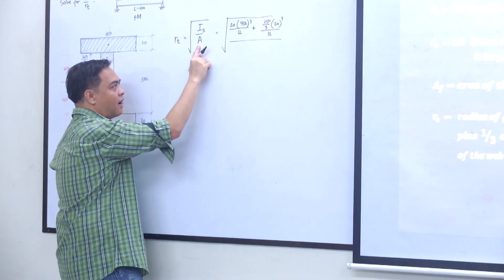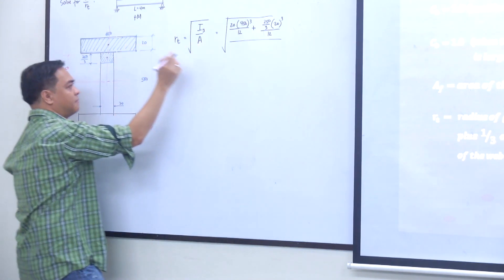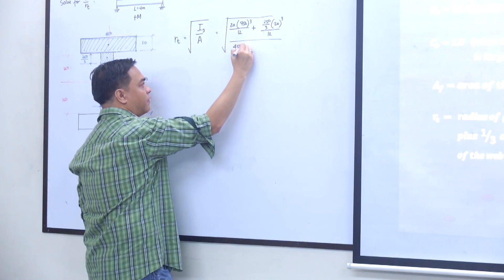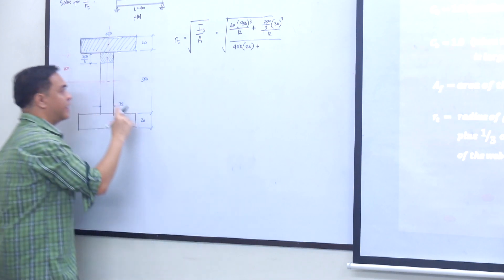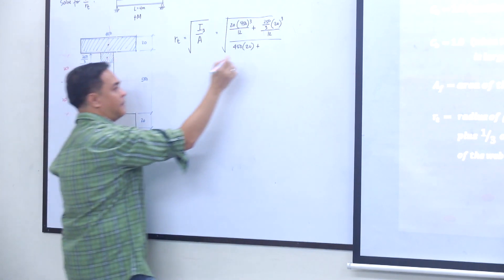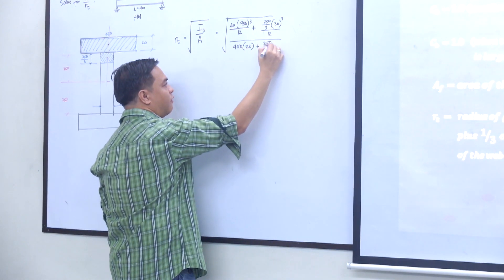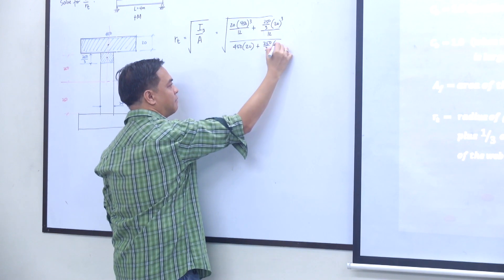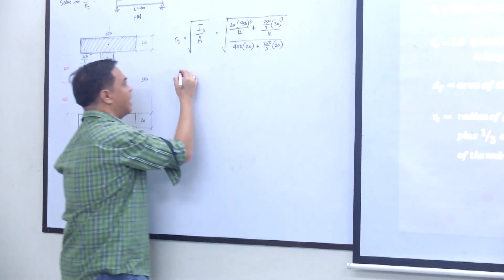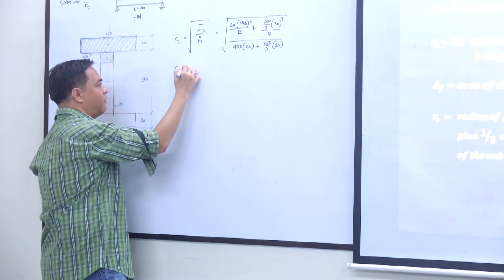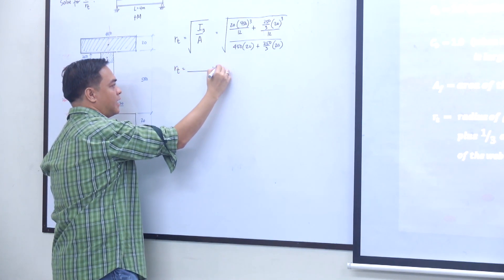Divided by the area of the compression flange, which is 450 times 20, plus the area of the compression web, 250 over 3 times 20. If you solve for that, that will give you the value of your R sub D.